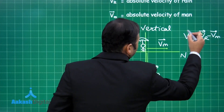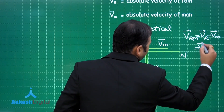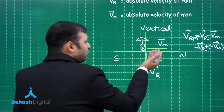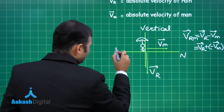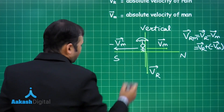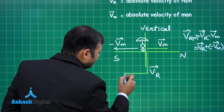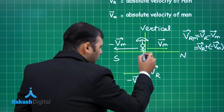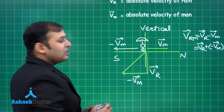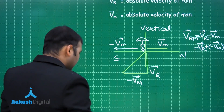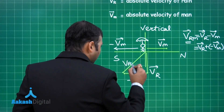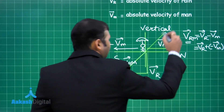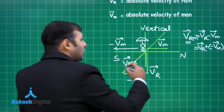Using the vector relation VRM = VR + (−VM): taking the inverse of VM gives −VM. Shifting that vector and joining the tail of VR to the head of −VM gives the resultant, which is VRM. Extrapolating this vector backwards shows that rain appears to the man as falling along a line at angle theta from the vertical.